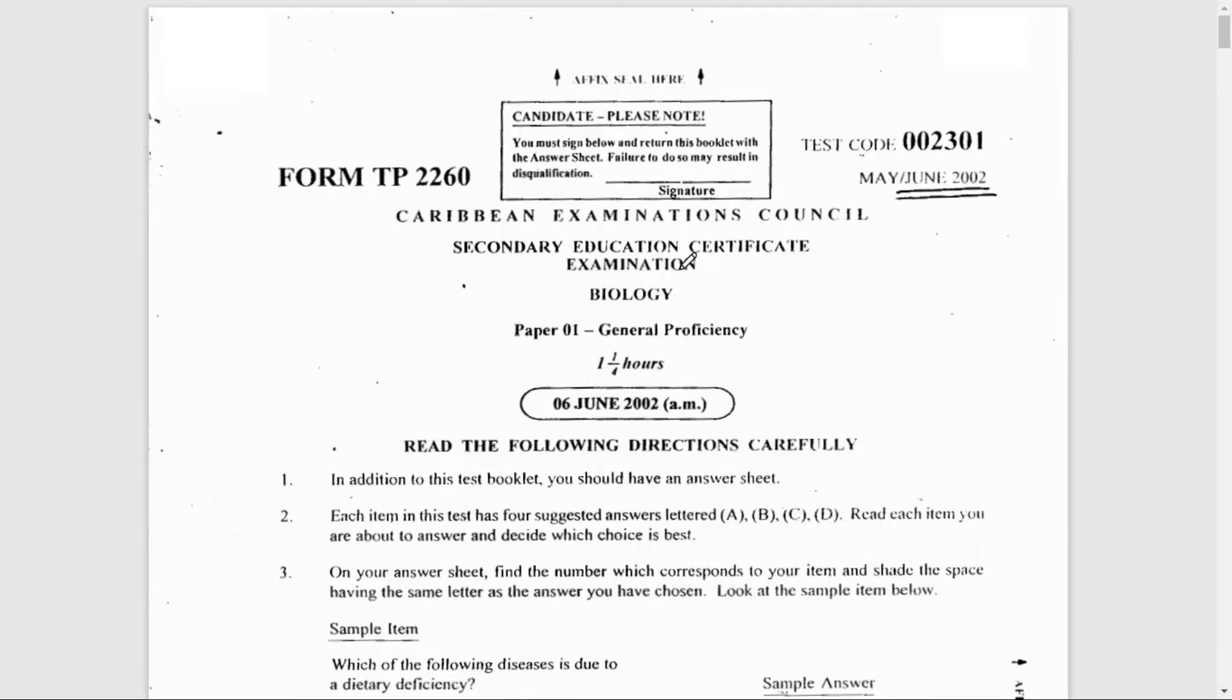Each past paper consists of 60 multiple choice questions. We dedicate each video to 20 questions. This means there will be three videos for each year. So this is the first video for May/June 2002. Let's go right into the questions.